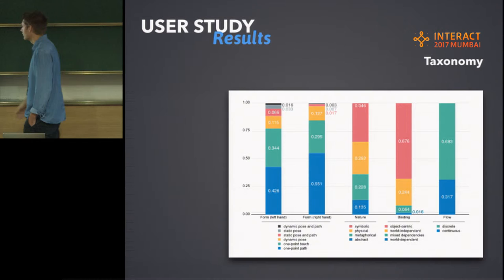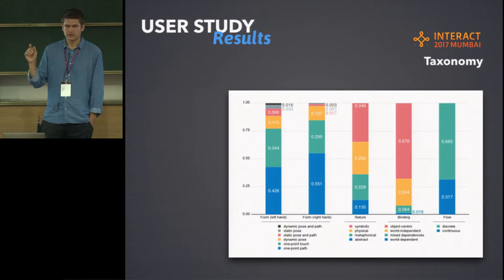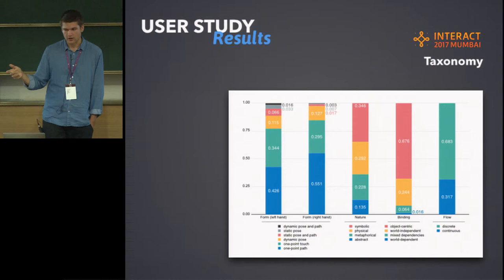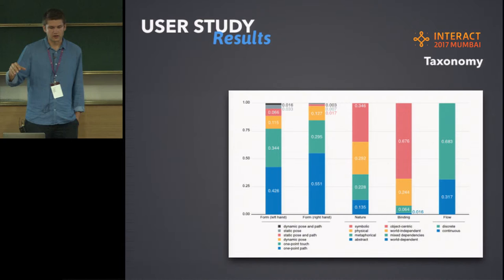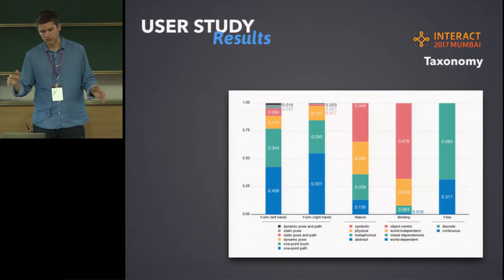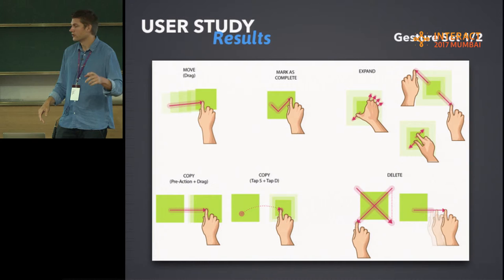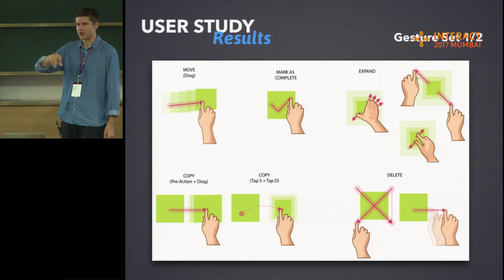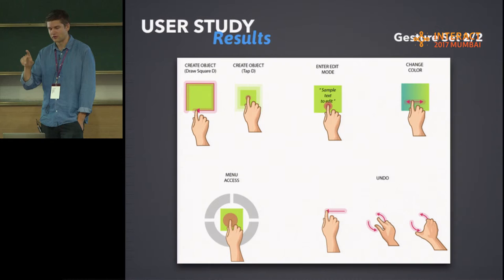Here is the result of the taxonomy. The interesting thing in the flow category is that most actions were discrete — instant actions like tapping or flicking rather than a continuous movement over time. In the binding category, most gestures were object-centric, meaning the gestures were focused on the object itself rather than around it. Based on these results, we put together a proposed gesture set. For example, move would be a drag-and-drop movement; marking as complete would be drawing a check mark on the object; and for changing color, most people slid their finger across the object.